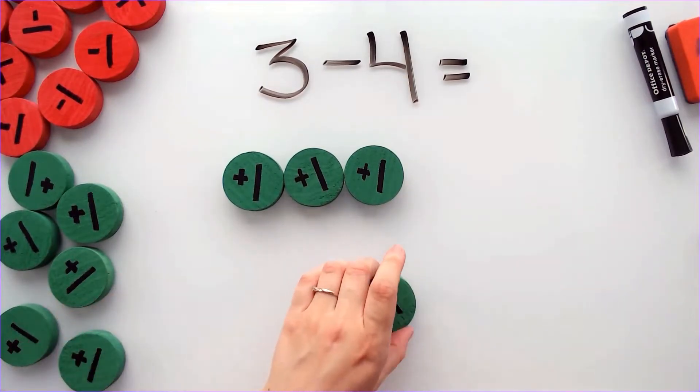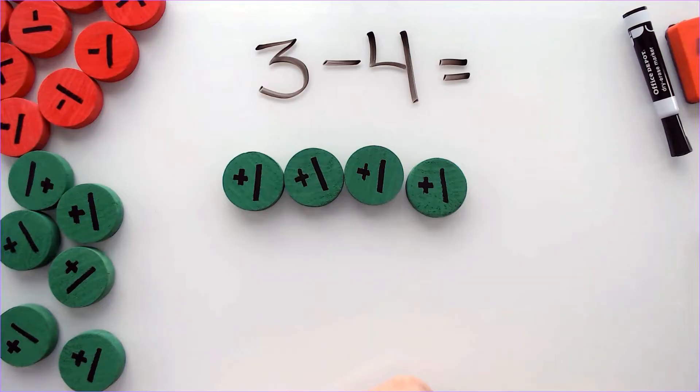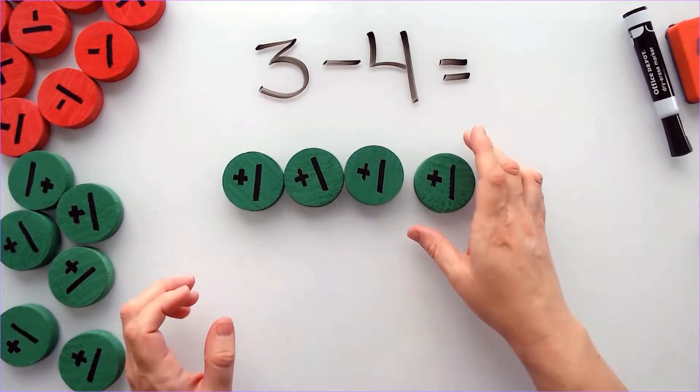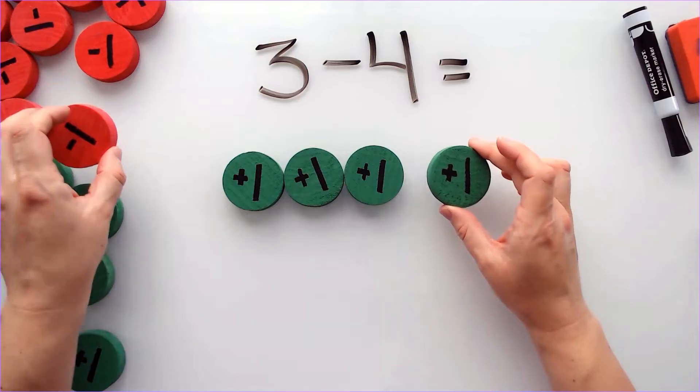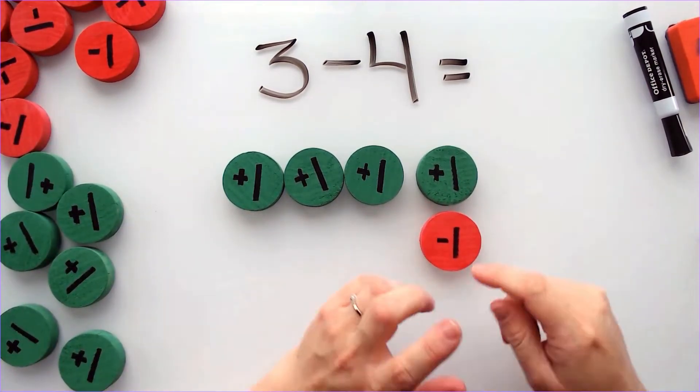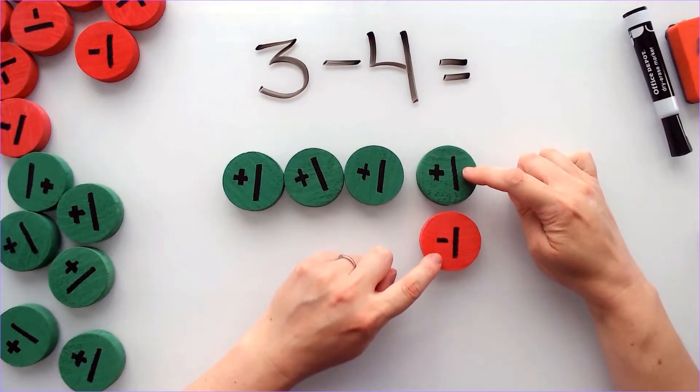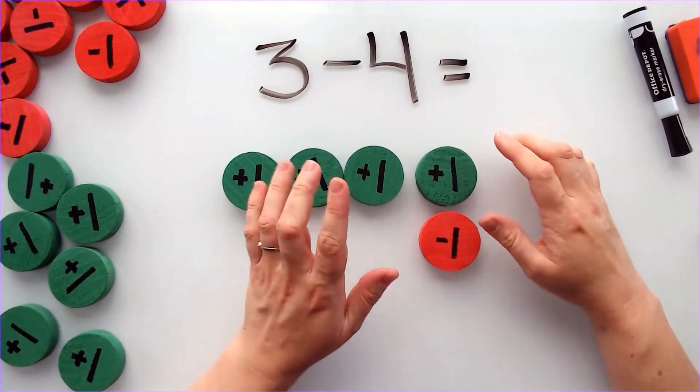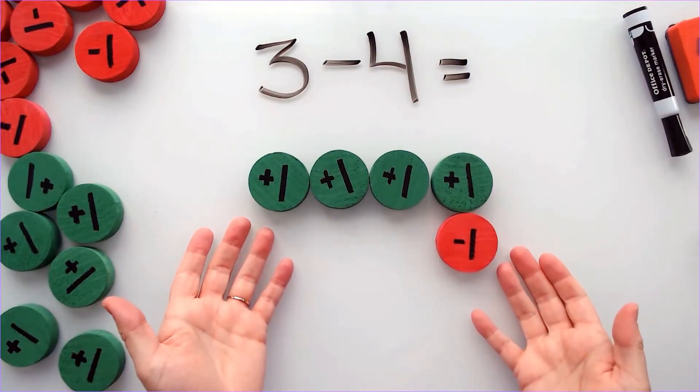But I can't just add a positive because that would be incorrect. So what I can do is I can add a positive and add a negative because these two actually equal 0. So it's as if they're not even there. So now, looking at this problem...